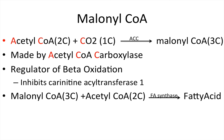The first thing we're going to talk about are the major players. One of the major players you need to know about is malonyl-CoA. Malonyl-CoA is a three-carbon molecule made by the enzyme ACC, which is acetyl-CoA carboxylase. It's made from acetyl-CoA and CO2 — two carbons plus one carbon making a three-carbon molecule. Malonyl-CoA is very important because it's the first intermediate in fatty acid synthesis, and also because it regulates beta-oxidation. Malonyl-CoA inhibits carnitine acyltransferase 1.